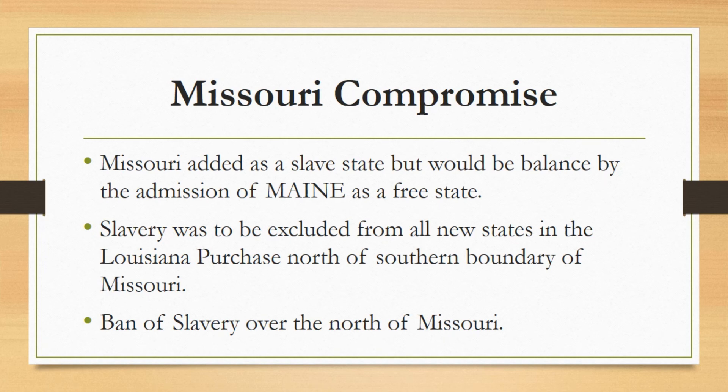These were the points of the Missouri Compromise — the strategy and policy through which balance was maintained between the free and slave states within Congress at that time. However, later on, the Missouri Compromise was declared unconstitutional by the Supreme Court.